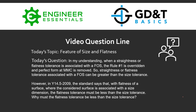Hey everybody, Jason here at the GD&T Basics video question line. Today's topic is features of size and flatness. The question submitted was: in my understanding, when straightness or flatness tolerance is associated with a feature of size, Rule #1 is overridden and perfect form at MMC is no longer required, so straightness or flatness tolerance associated with the feature of size can be greater than the size tolerance.